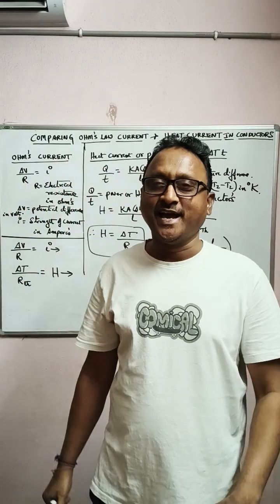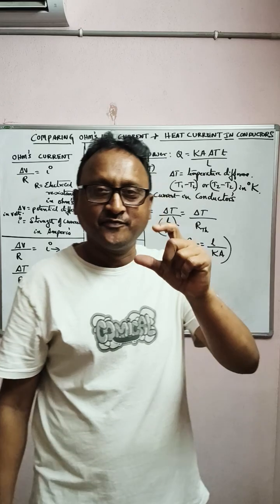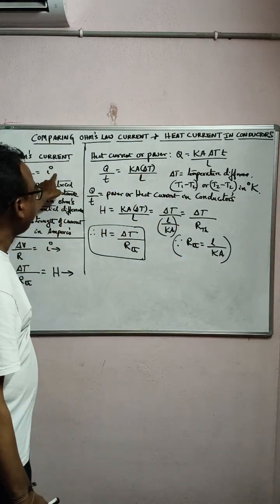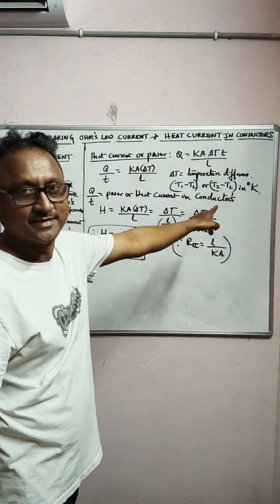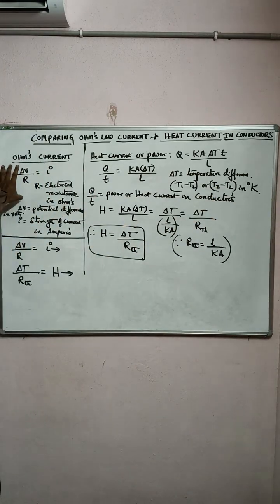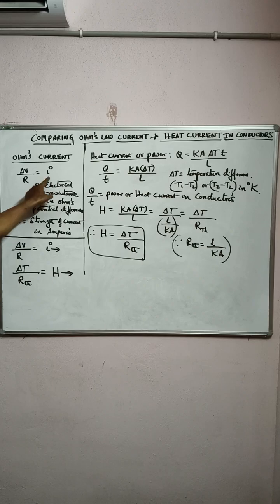Hi friends, today I'm going to tell you the difference between Ohm's law current and heat current in conductors. In Ohm's law current, you know delta V by R, potential difference by electrical resistance, is equal to current.